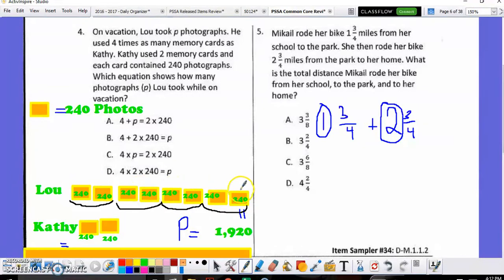And then you can either multiply 240 by one, two, three, four, five, six, seven, eight, or add 240 eight times to get the answer for how many photos Lou took, which is 1,920. Then what I would do is I would plug it into every single one and see which of these got me 1,920. Let's take a look.